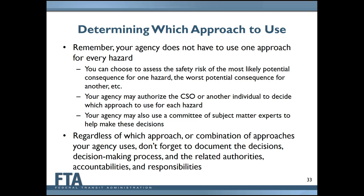It's important to remember that your agency doesn't have to use the same approach for every single hazard — you could assess the most likely potential consequence for one hazard and the worst potential consequence for another. Some agencies may authorize the CSO or another individual to decide which approach is most appropriate for each hazard. We've also seen agencies use a committee made up of subject matter experts to assist in making these decisions, or delegate this decision to a committee that supports the whole SRM process.